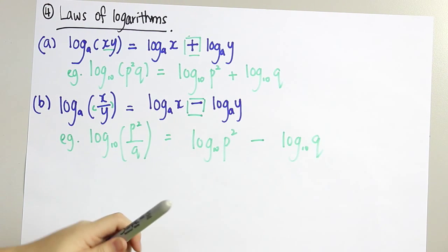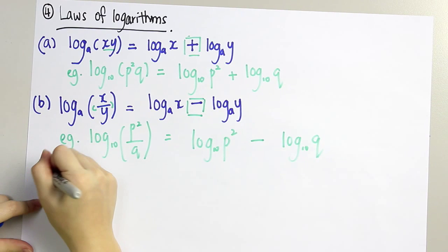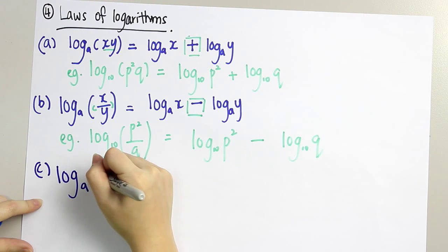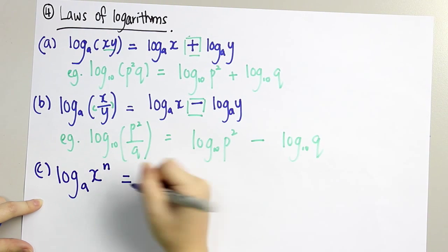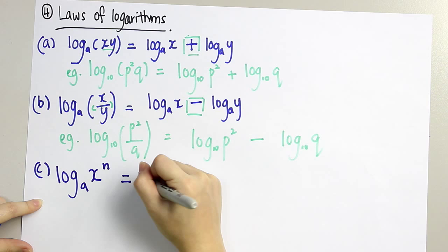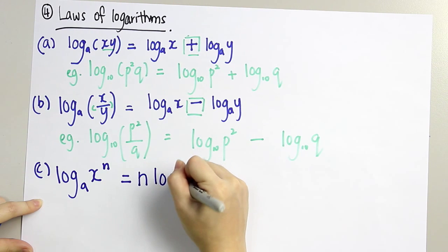And lastly, log base a of x to the power of n. Then we control the power. We can put the power in front to multiply the log.